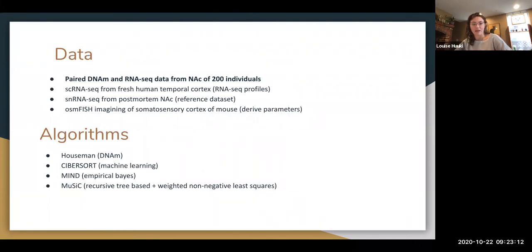And then the four different algorithms they looked at was the Houseman, which they used to make the base truth with DNA methylation. CIBERSORTx, which is a machine learning approach. MIND, which is empirical based. And MuSiC is the one that they focus on the most. So it's recursive tree based and weighted non-negative least squares. And that's the one that has parameters for cell size, which is what they focus on the most.